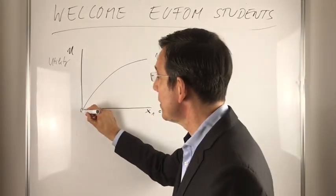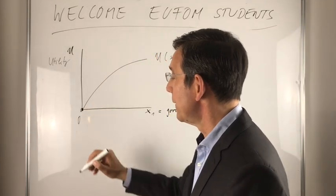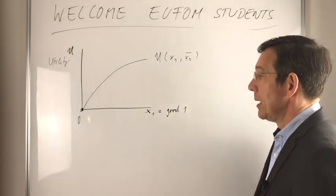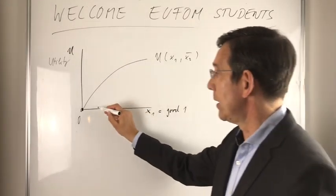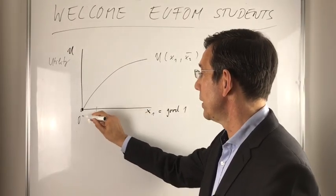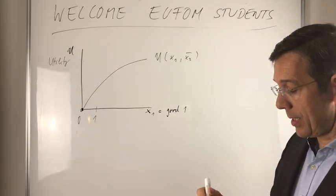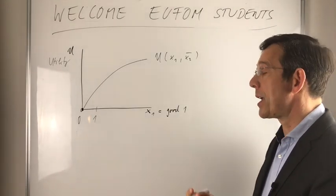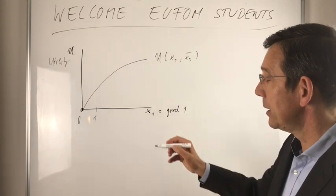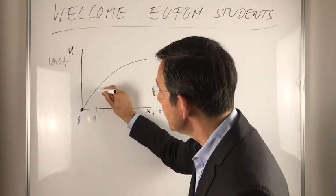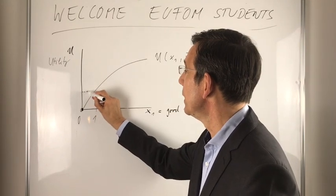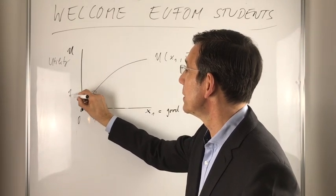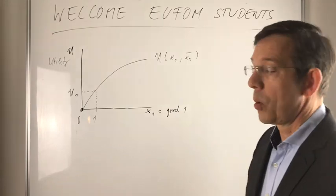So let's start with zero here in the very beginning. And if you increase the quantity of good one, let's say from zero to one, this is associated with a higher utility. So your utility is increasing and maybe you end up here. Let's say that's u1.